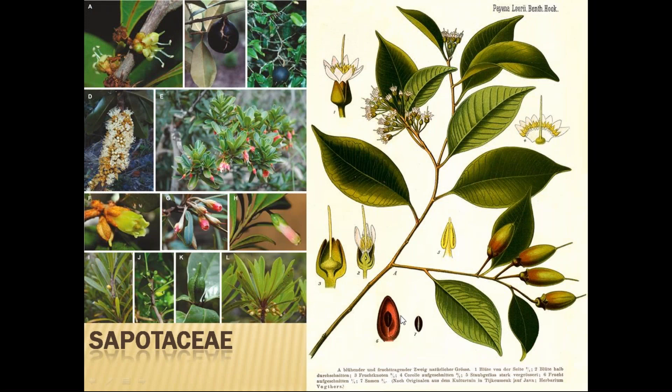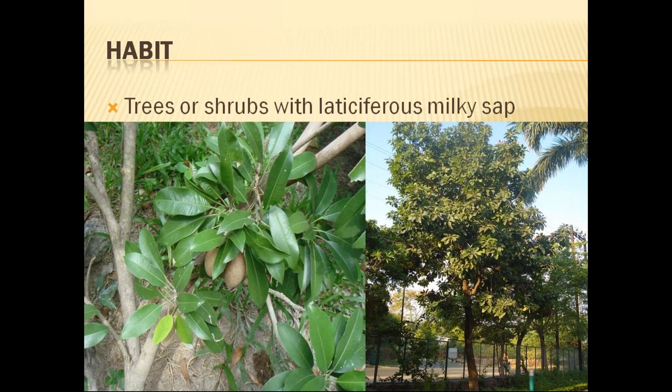Next is Sapotaceae, that is the Chikku family — the well-known edible fruit comes from this particular family. This is another important family, and some plants used in Ayurvedic practice come from it. The habit is generally trees and shrubs with laticiferous milky sap — that is one of the important characteristics. Just like Asclepiadaceae, Apocynaceae, some plants of Rubiaceae, Euphorbiaceae, and Cactaceae, these plants also have laticiferous milky sap.